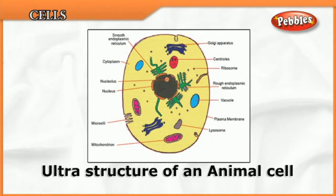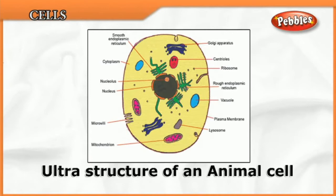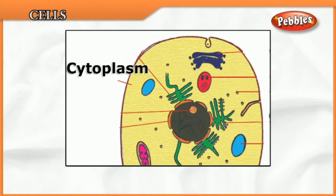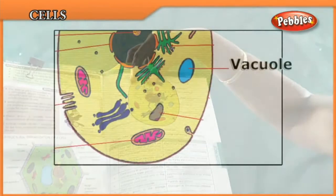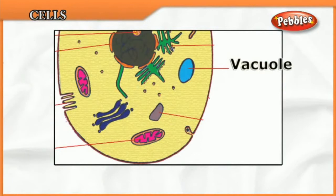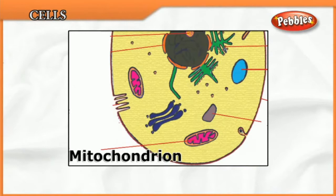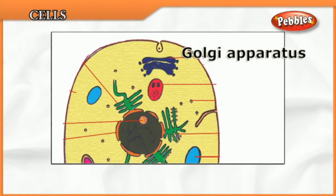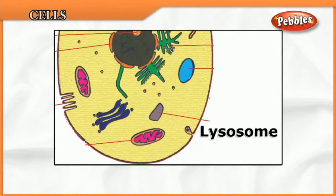Now we'll read about the cell membrane. The cell membrane is a thin, selectively permeable membrane covering all the cell organelles and protecting the cell — it acts like a boundary for all cell organelles. It protects the cell from injury, selects only certain substances to pass through (not all), provides protection within the cell and between adjacent cells, and gives organic connection between cells. The cell membrane is also called the plasma membrane or plasma lamella.